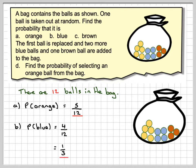The probability of brown is going to be 3/12, because there are three brown balls out of 12, and that cancels down to one fourth.